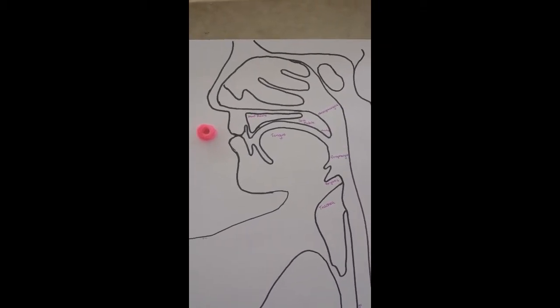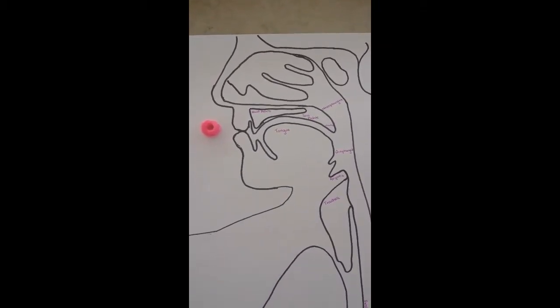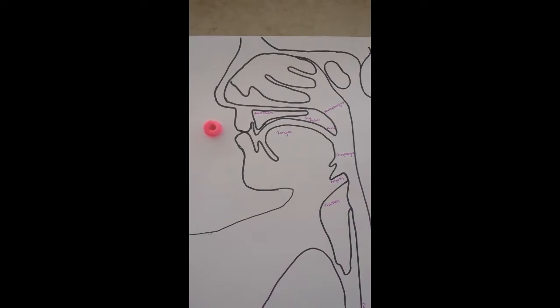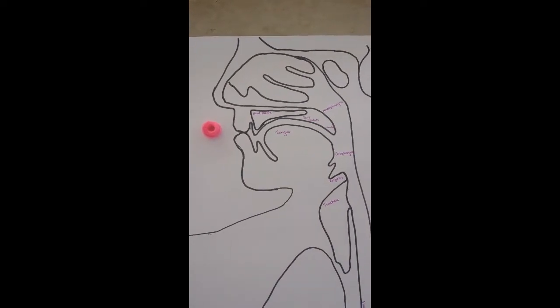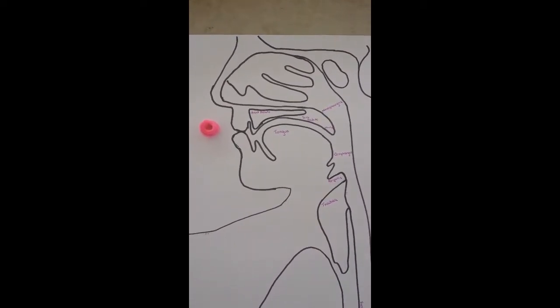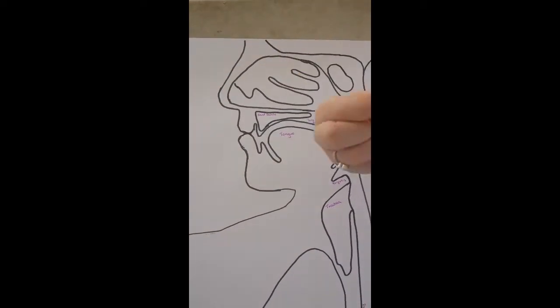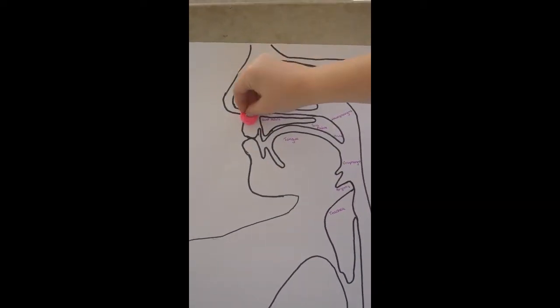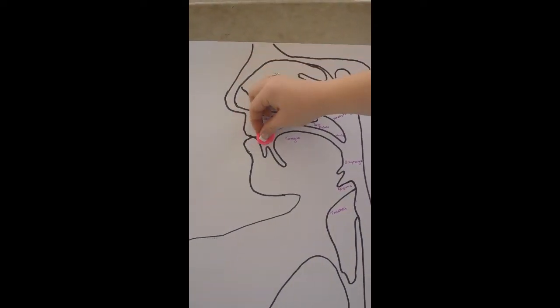This process occurs in three phases. The first phase of deglutition is the buccal phase. The buccal phase begins with mastication. Mastication is the process of chewing and creates a bolus of food that will move through the stages of swallowing.